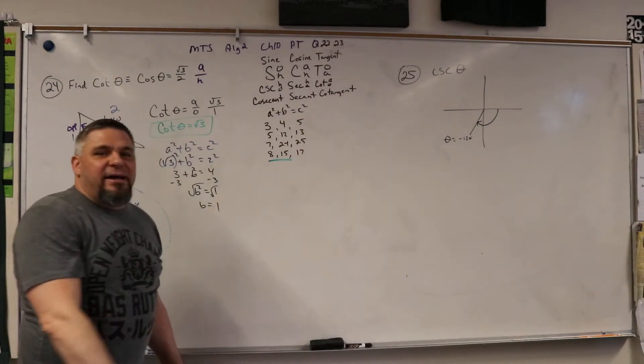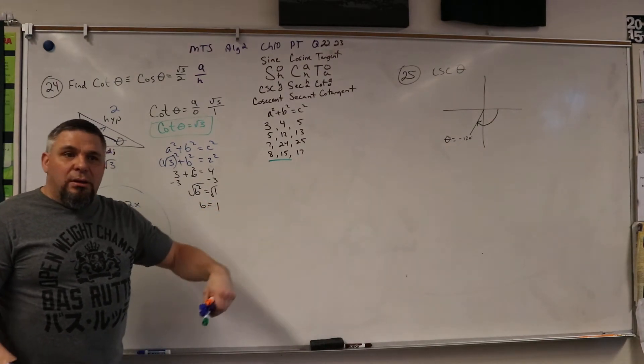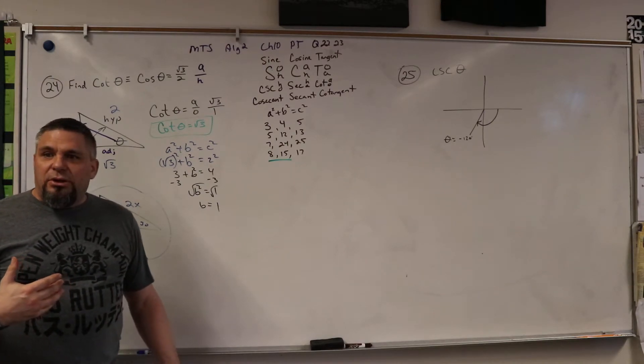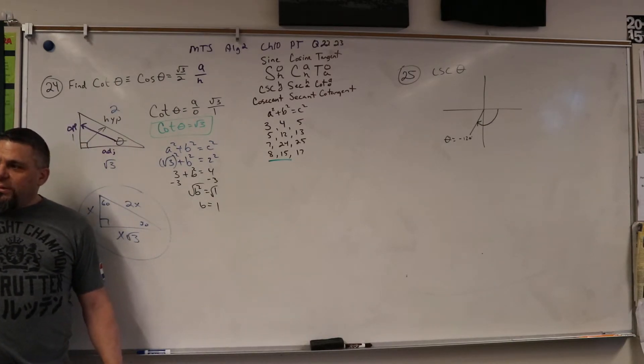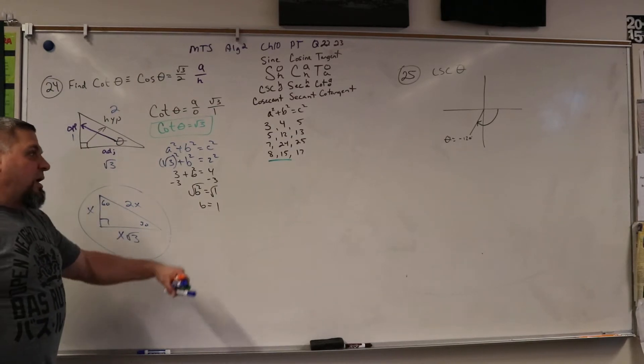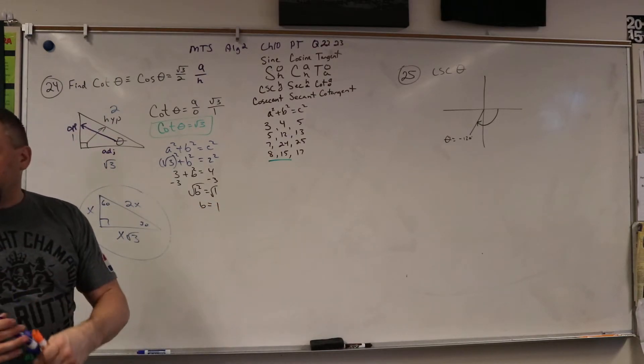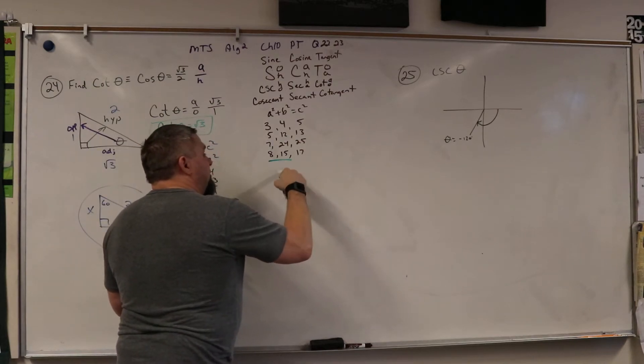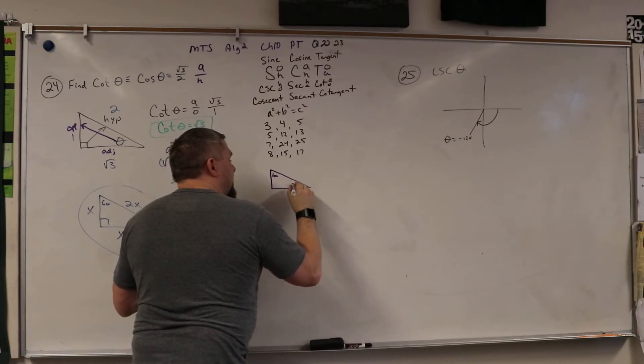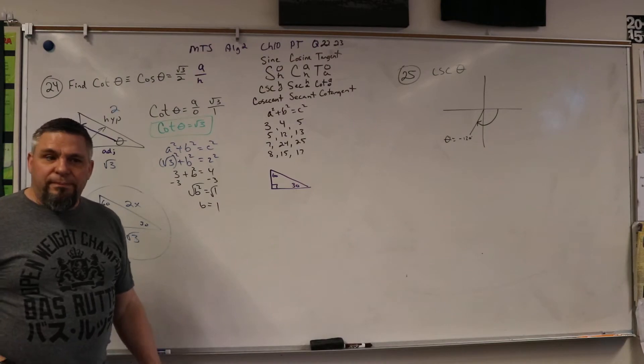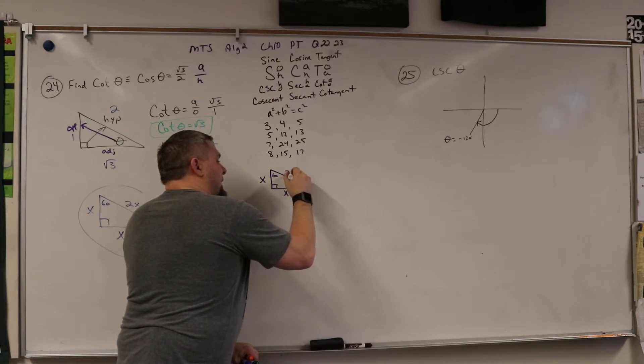So to add to this cheat sheet, what do you want to add to it? You kind of need your special triangles. Because this I pulled out of my head, or maybe somewhere else, but I don't want to have to pull it out of somewhere else. I want to be able to see it on my cheat sheet. So I'm going to put those special triangles on my cheat sheet, and those special triangles are 60, 30, and that's x, x square root 3, and 2x.